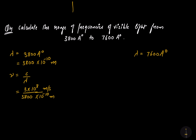The frequency for the lower wavelength limit (3800 Å) comes out to be 7.8 × 10¹⁴ per second. That was the frequency corresponding to the lower wavelength limit.